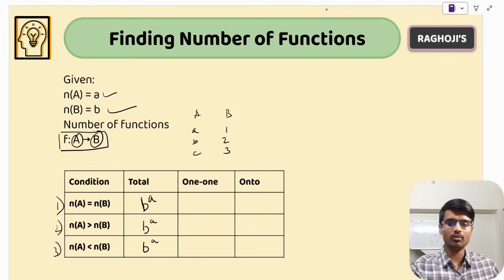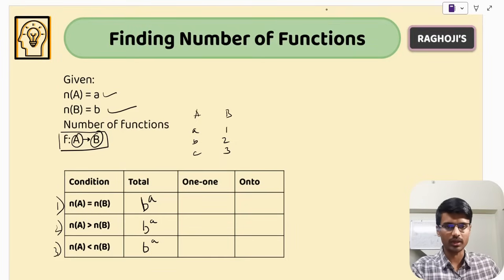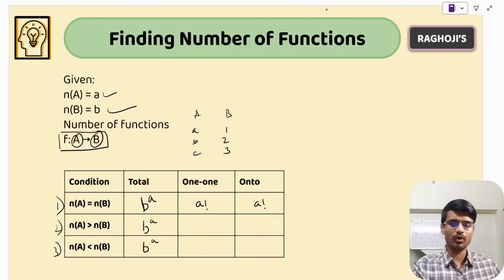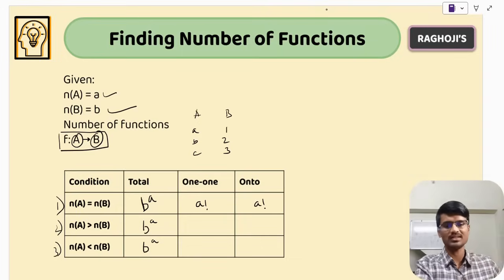Case 1: when the number of elements in A and B are equal. Number of one-one functions equals A factorial, and number of onto functions also equals A factorial. This means all one-one functions are also onto functions — the one-one functions and onto functions are the same when |A| = |B|.